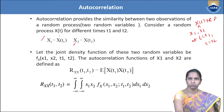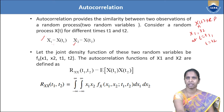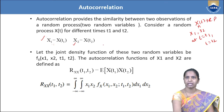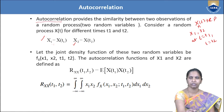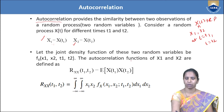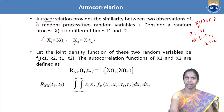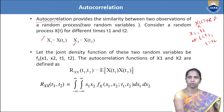Now we have the two random variables. The correlation between these two random variables is nothing but measuring the similarity between them. These two random variables are defined on the same random process x(t). This is called autocorrelation. Why the name 'auto'? Because on the same random process, I am defining both the random variables — that is why the name is autocorrelation.